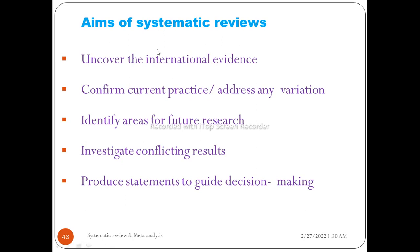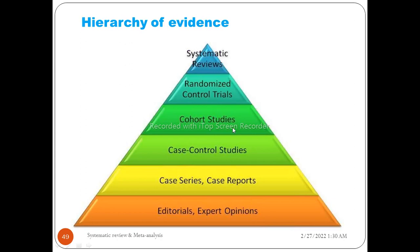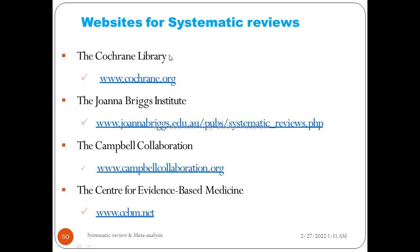The aims of systematic review are: to uncover international evidence; to confirm current practice; to address variation between studies; to identify areas for future research; to investigate conflicting results; and to produce statements to guide decision making. In the hierarchy of evidence, individual studies such as case reports, case-control, and cohort studies are at lower levels, while systematic review is at the top with the strongest evidence.